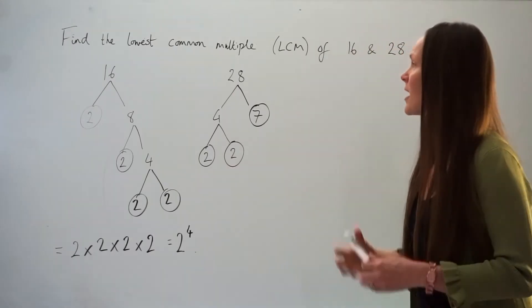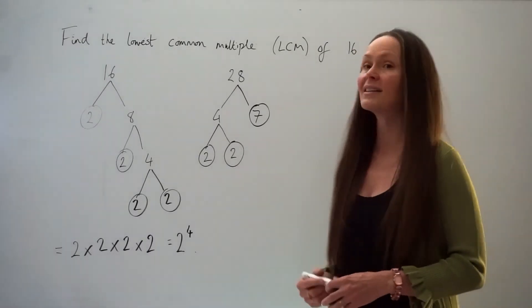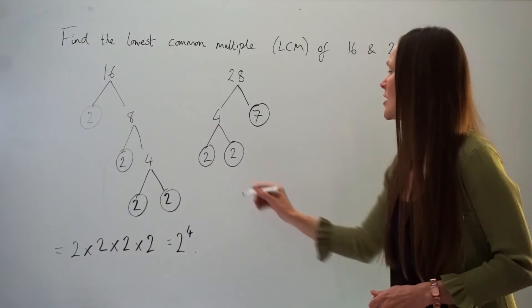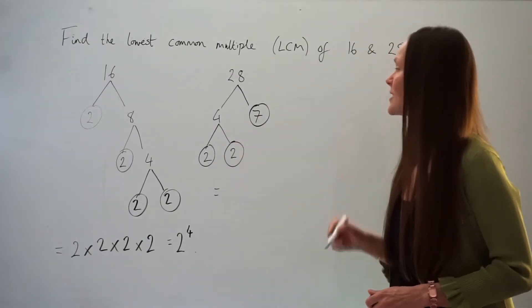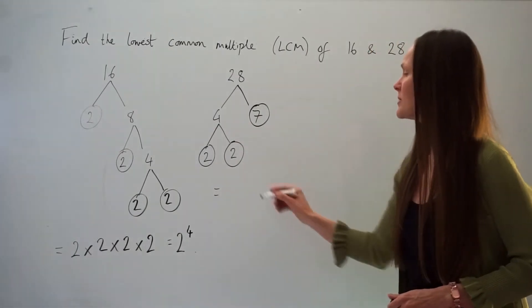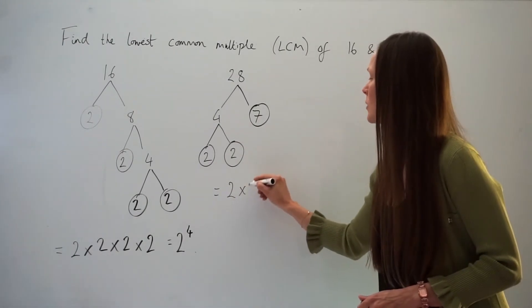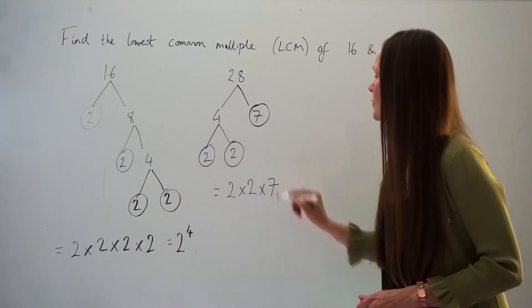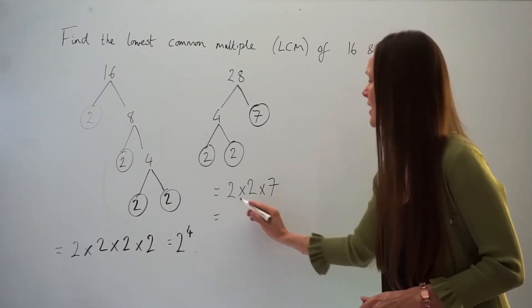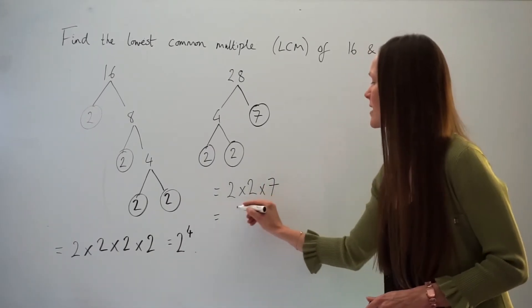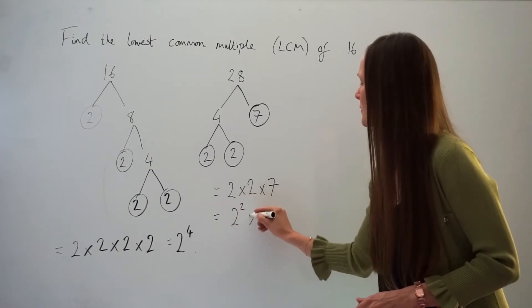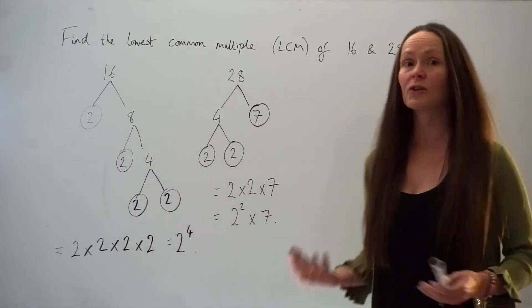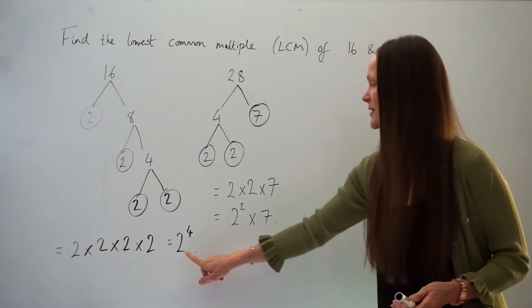Just like with the previous number, write 28 as a product of its prime factors: 2 × 2 × 7. This can be written as 2 squared multiplied by 7. You'll see why it's a good idea to write it in power form in a moment.